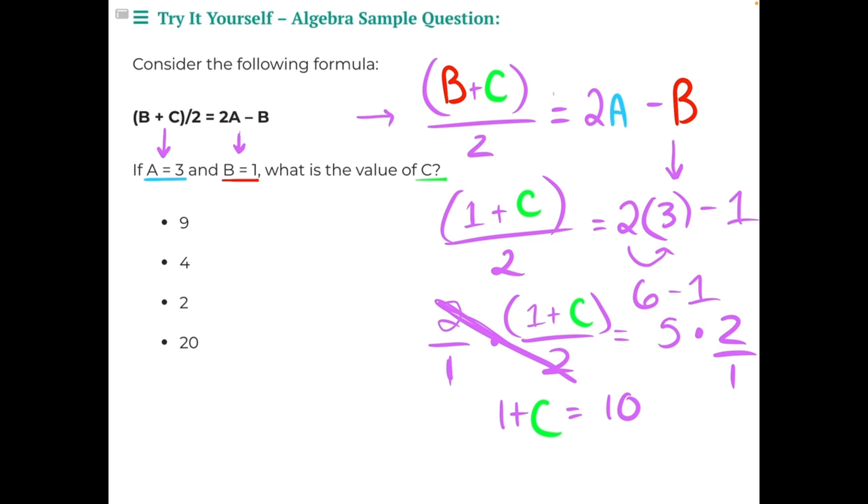And the last step to isolate c would be to move this 1 over to the other side. 1 is being added to c, so we need to do the opposite, subtract 1 from both sides, and that will give us c equals 9, making our first option our correct answer.